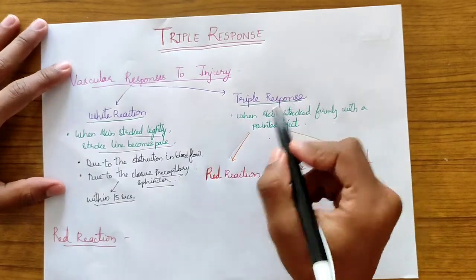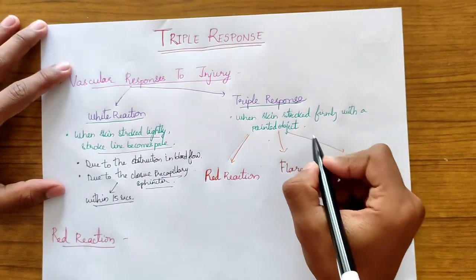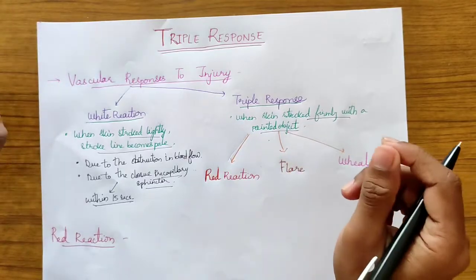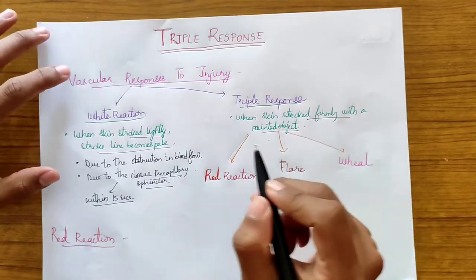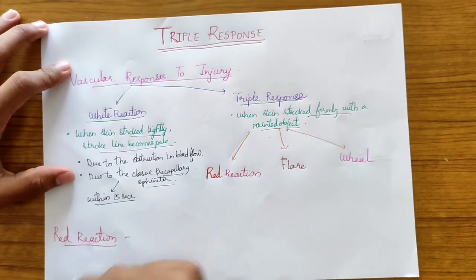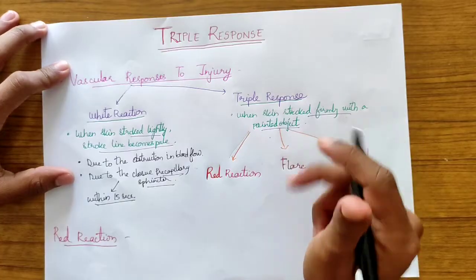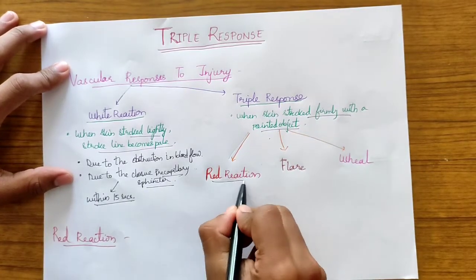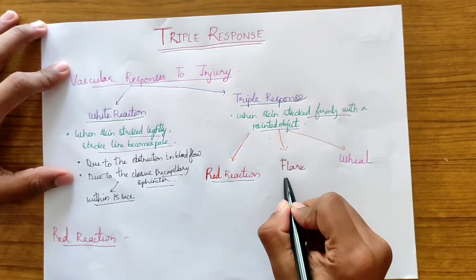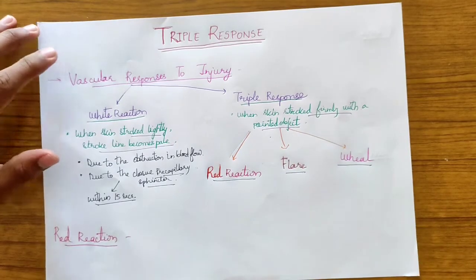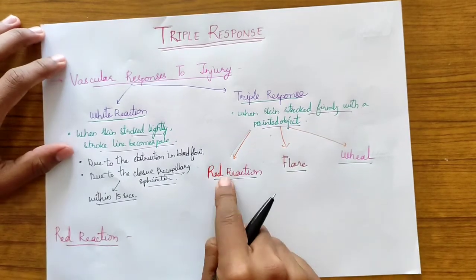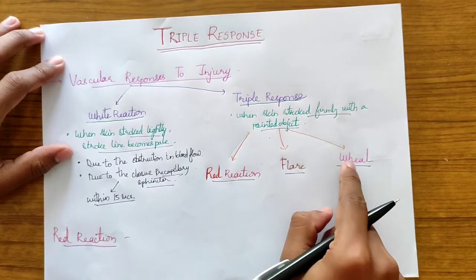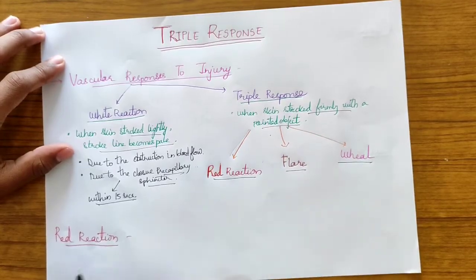Then comes the triple response. When the skin is stroked more firmly with a pointed object, it causes the triple response. The triple response is divided into three components: red reaction, flare, and wheal. We will talk about these components one by one.